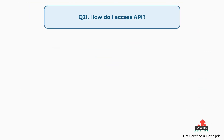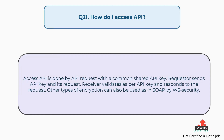Question number twenty-one: How do I access an API? Accessing an API is done by an API request with a common shared API key. The requester sends the API key with its request, and the receiver validates as per the API key and responds to the request. Other types of encryption can also be used, as in SOAP by WS Security.